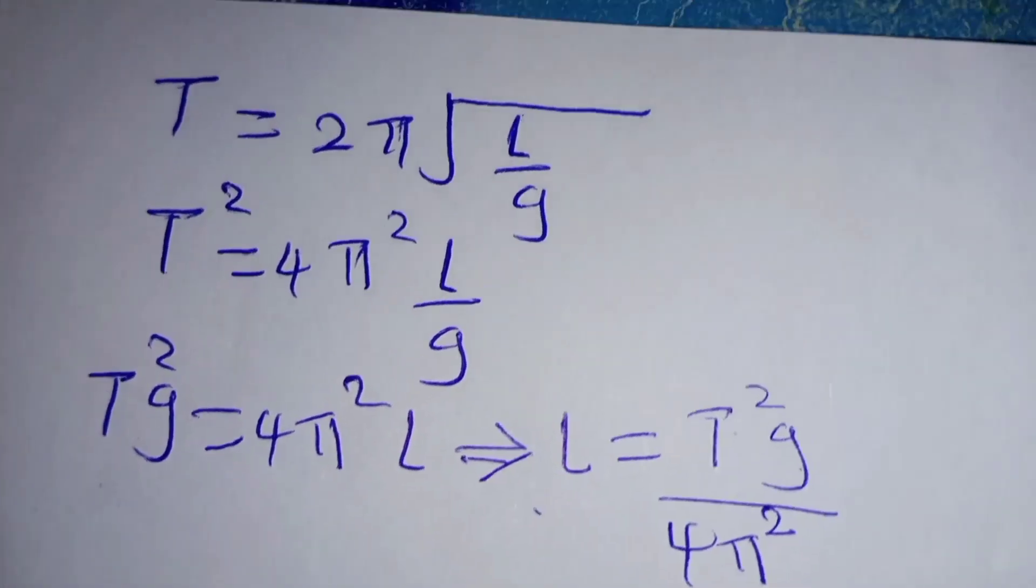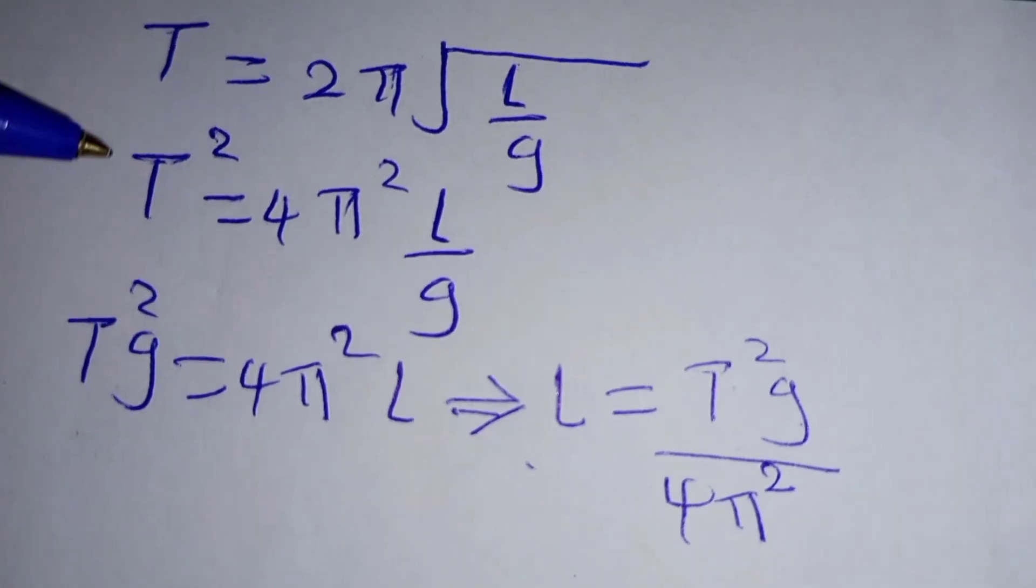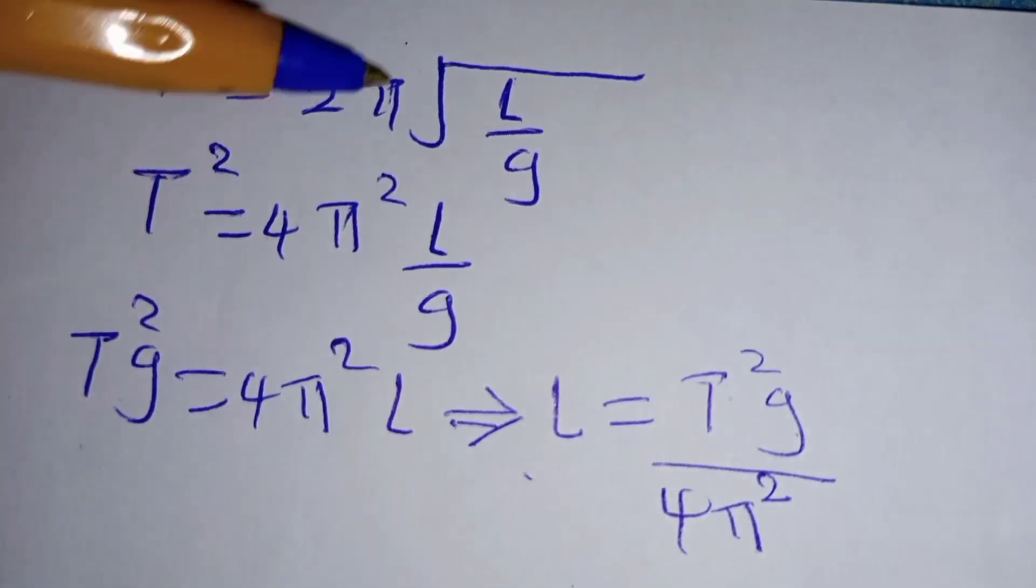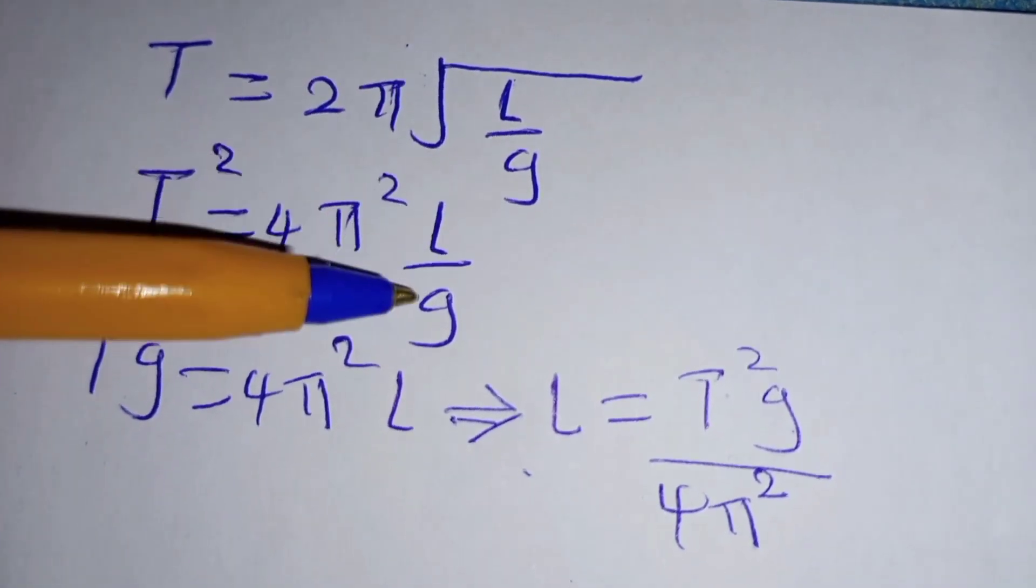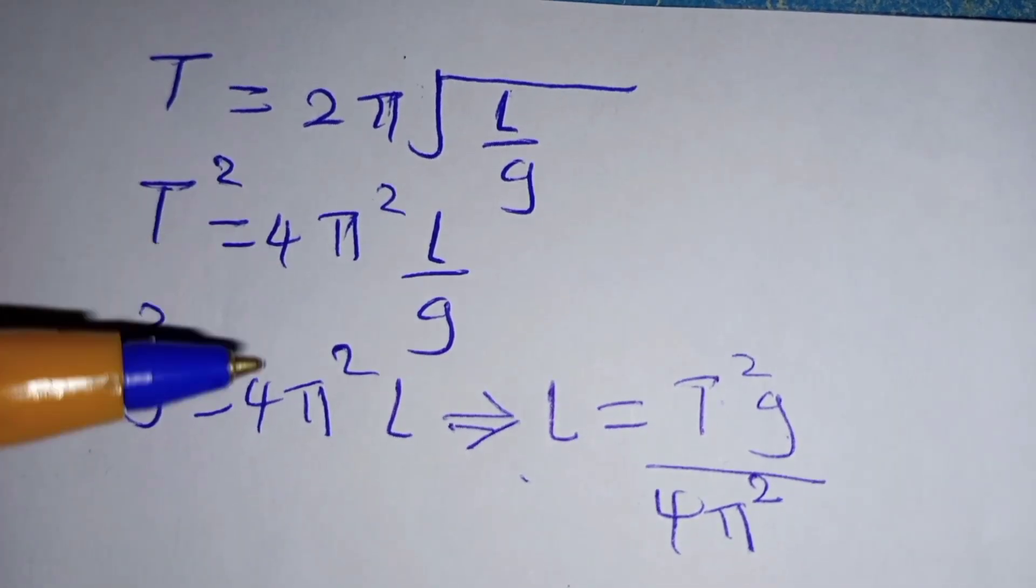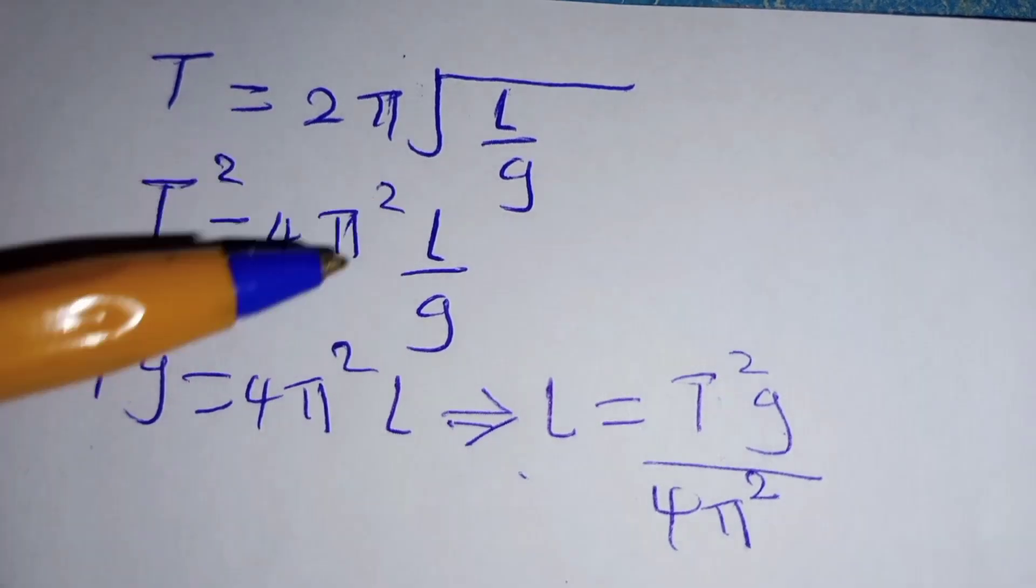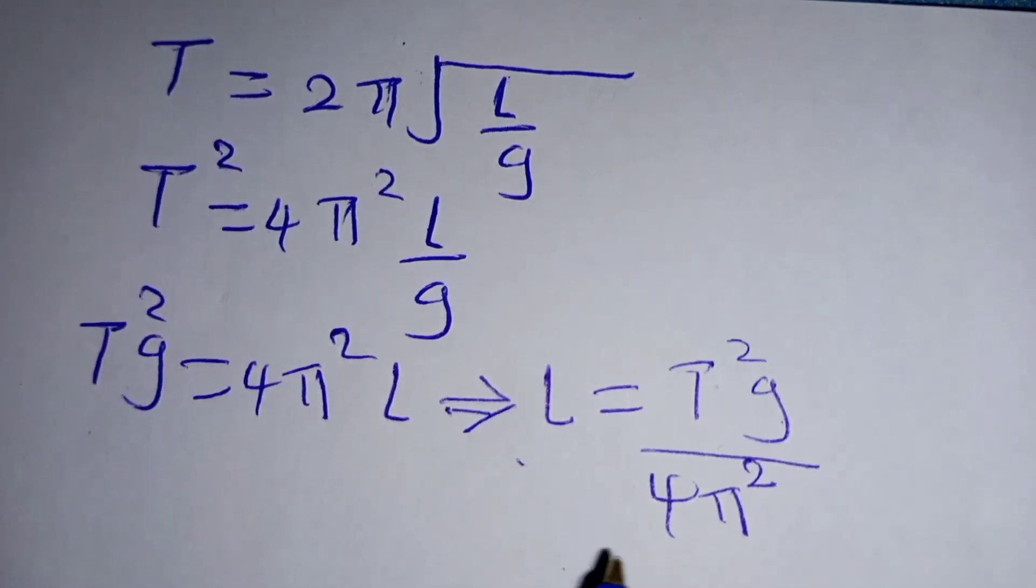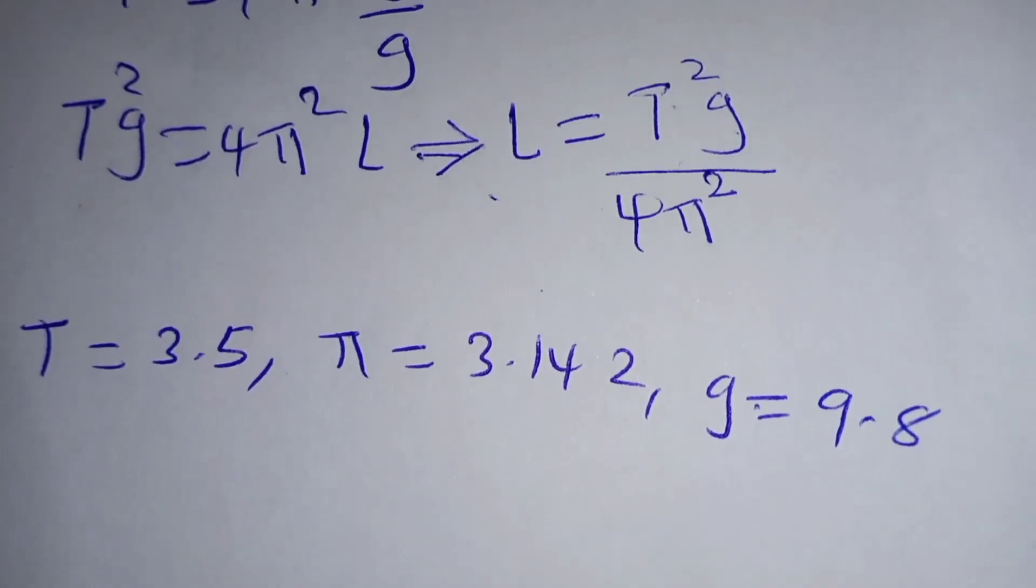So what we have done here: we squared everything so that we have T², 2² is 4, π², and √(L/g)² is L/g. Then we multiplied both sides by g so that we are left with 4π²L. Since we need L, we divided by 4π².